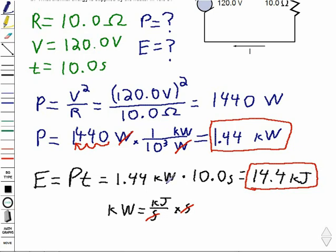So my unit is energy joules. It comes from a watt being a joule per second or a kilowatt being a kilojoule per second, multiplying by seconds, and we get a unit of energy. Okay, thank you.